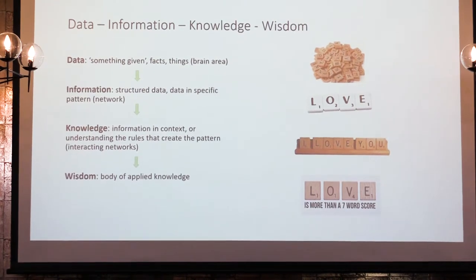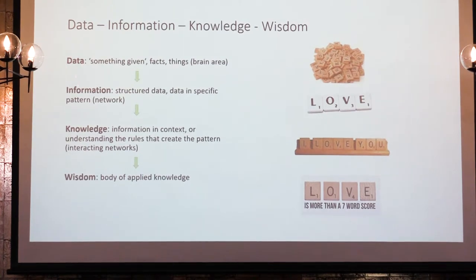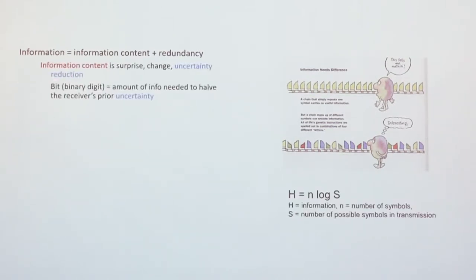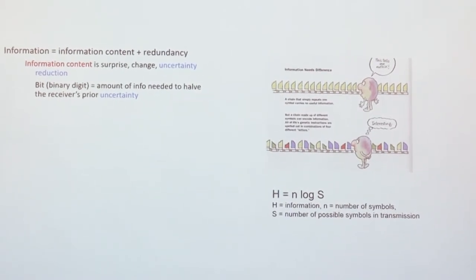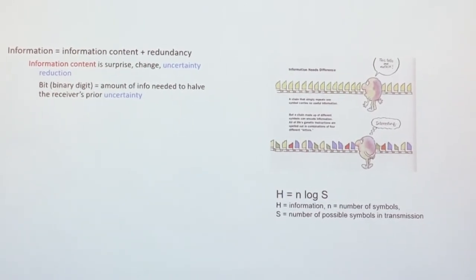Data, information, and knowledge actually all have different meanings. But from a brain point of view, data is just a signal or stimulus, information is a pattern or structure of that stimulus, and knowledge is putting that pattern in a specific context. Information from information theory consists of two parts: information content and redundancy. Information requires variation, requires differences. Information content is basically uncertainty reduction — information allows you to reduce uncertainty — and we started by saying we have a brain in order to reduce uncertainty.